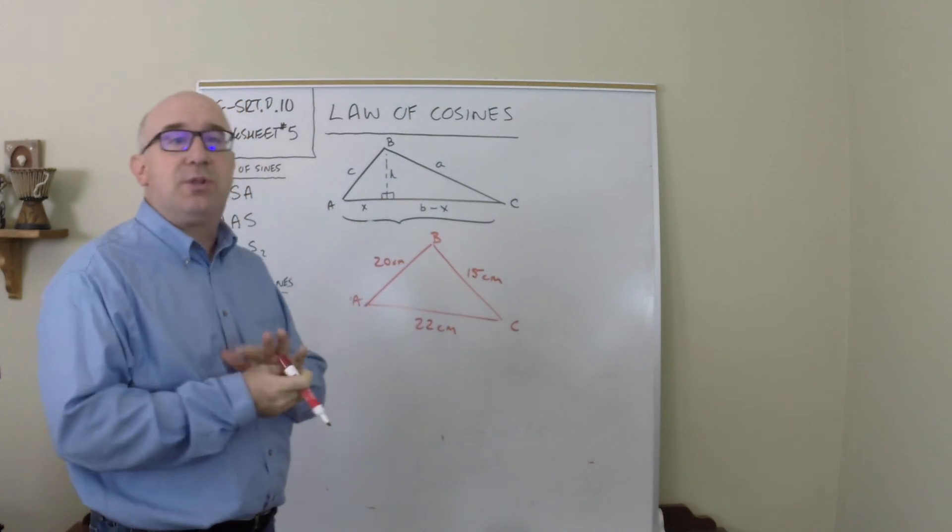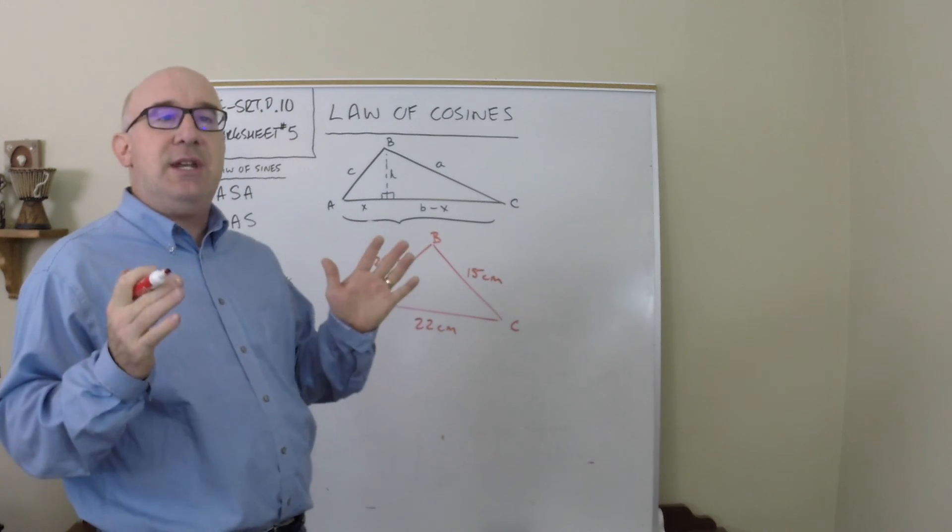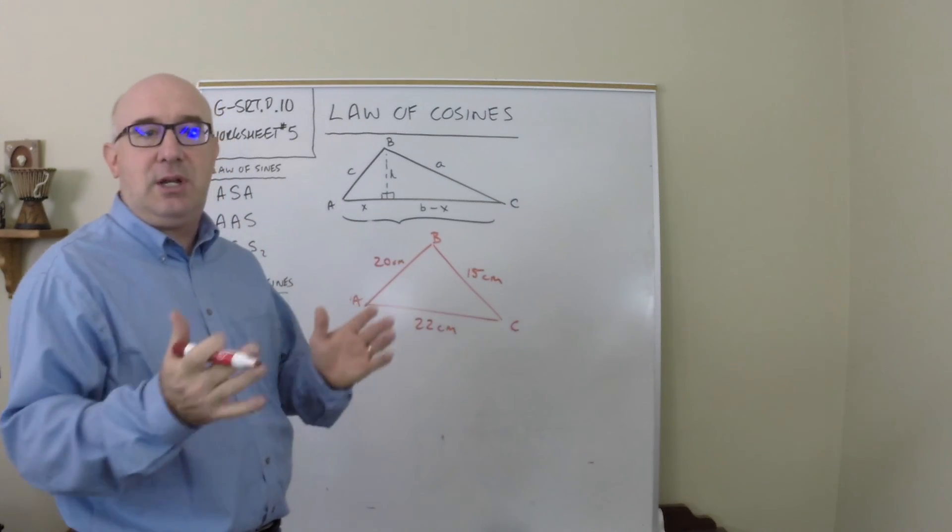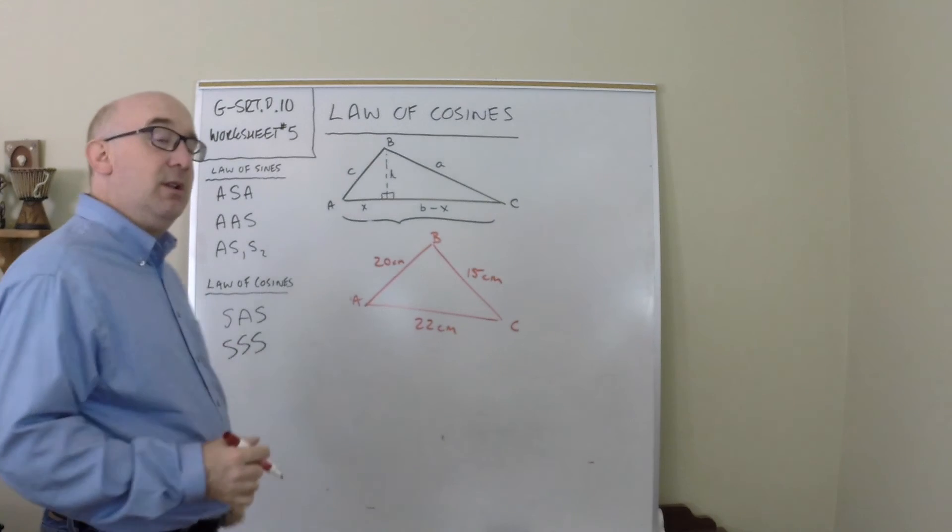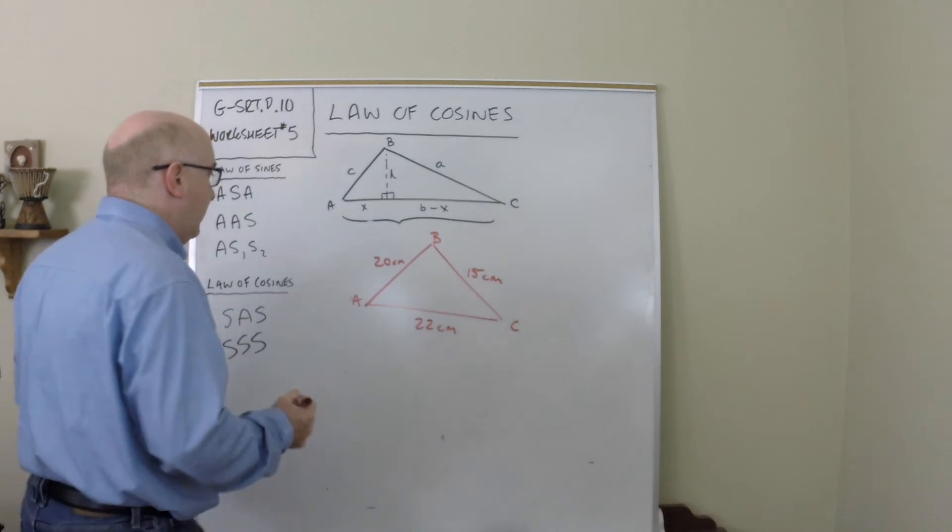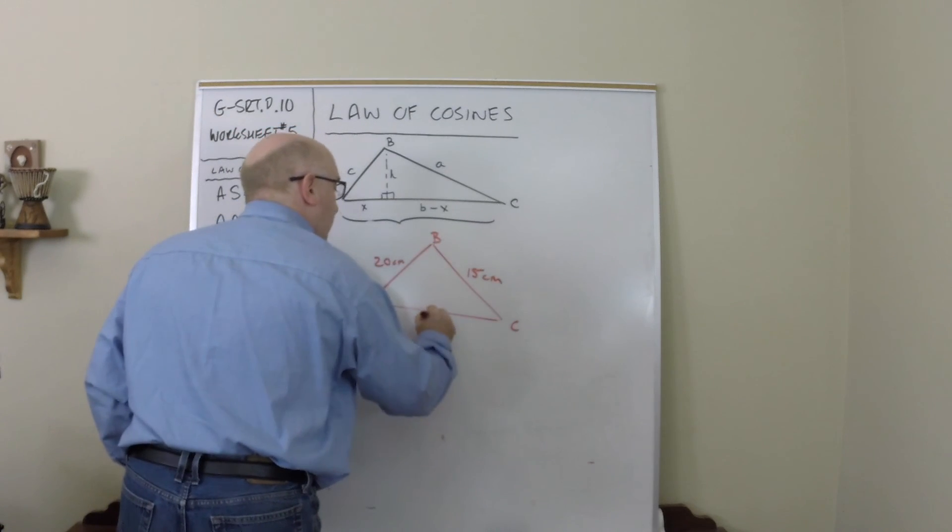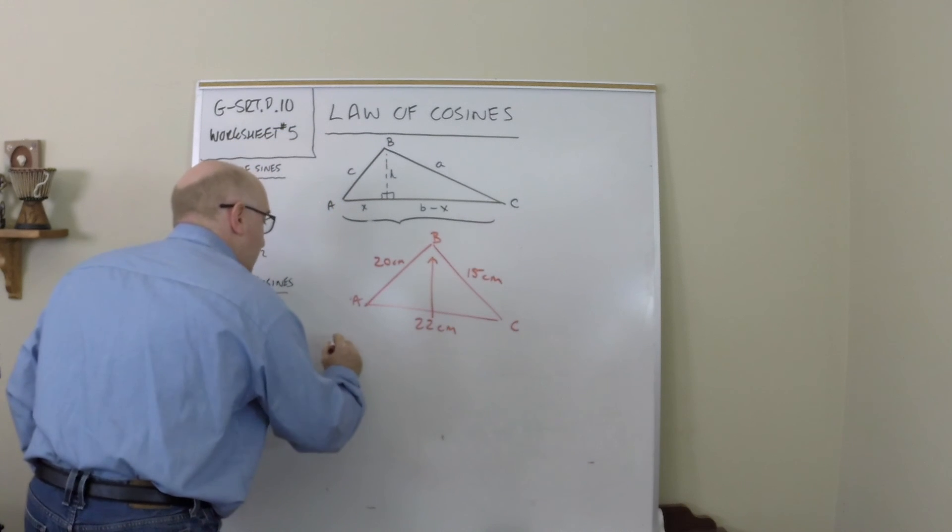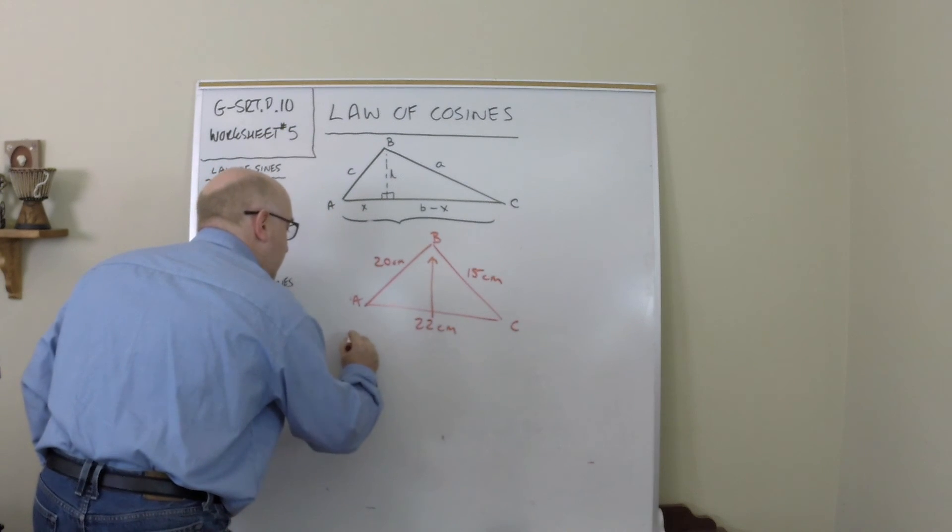because the law of cosines can distinguish easily whether it's an obtuse or an acute angle, whereas the law of sines isn't that helpful. So we would solve for b first.